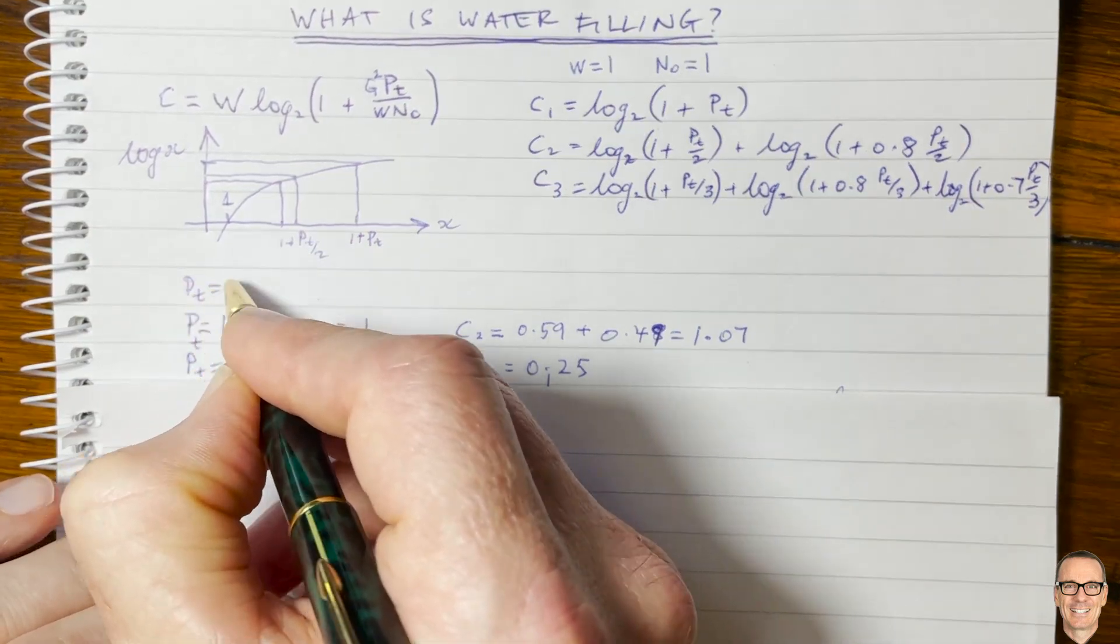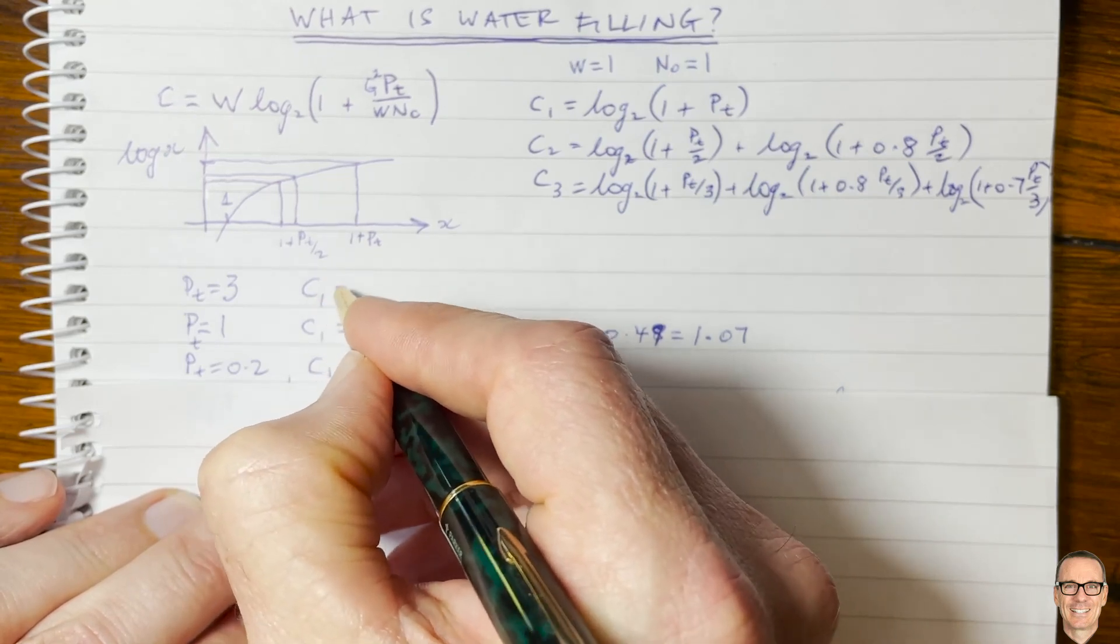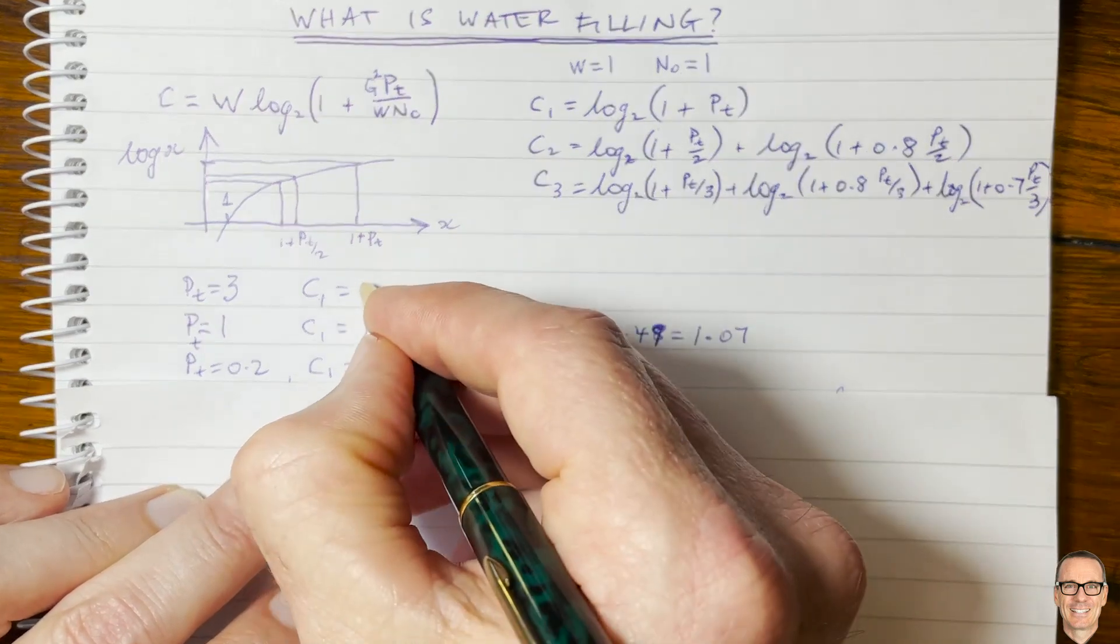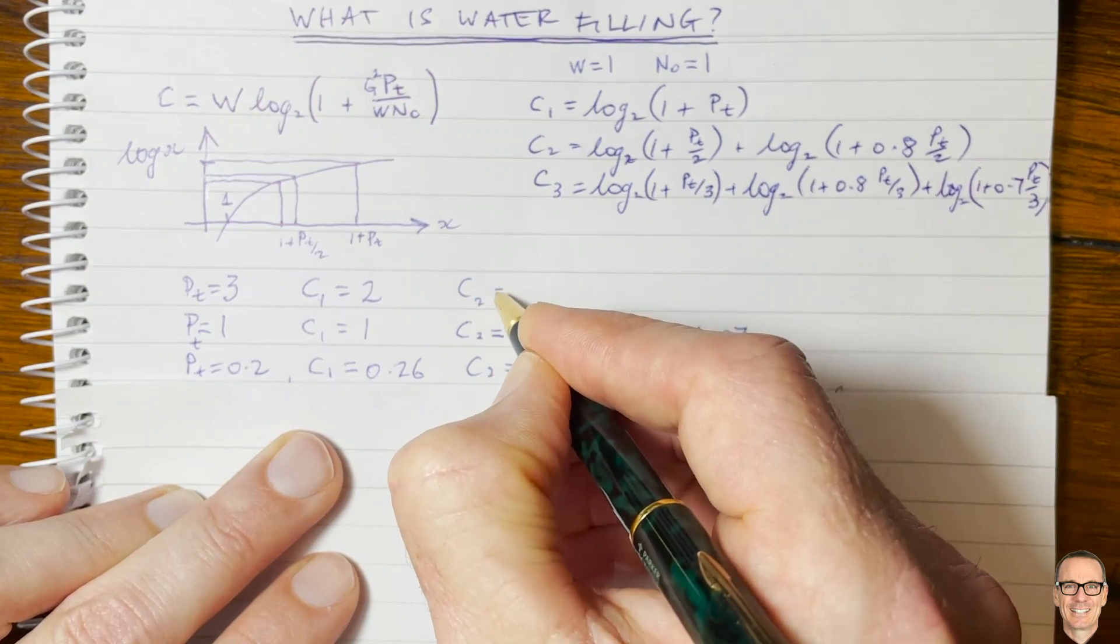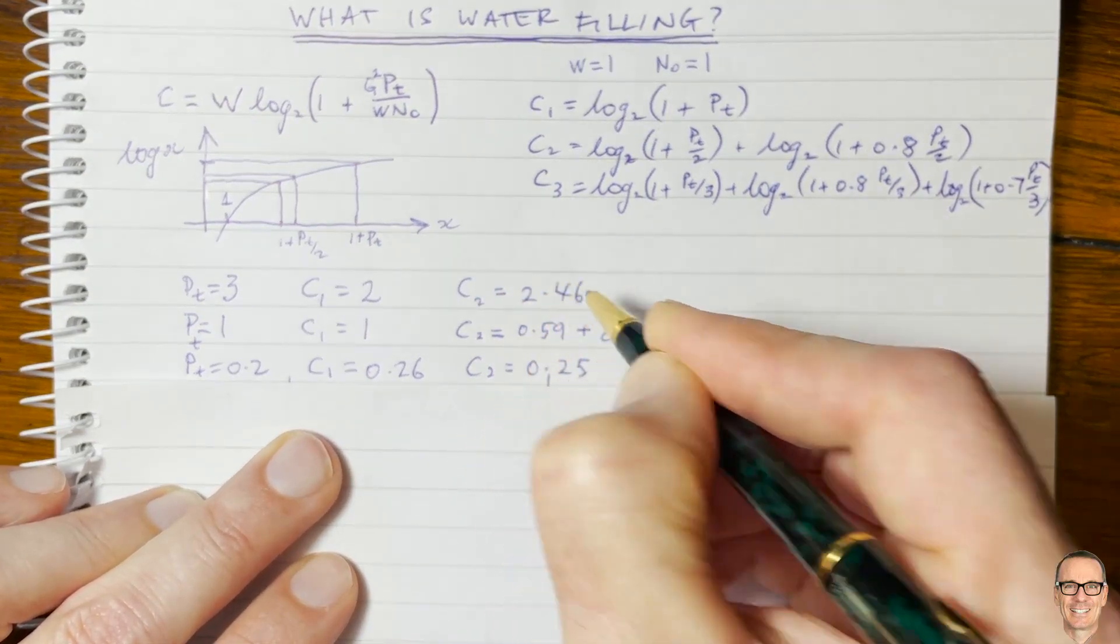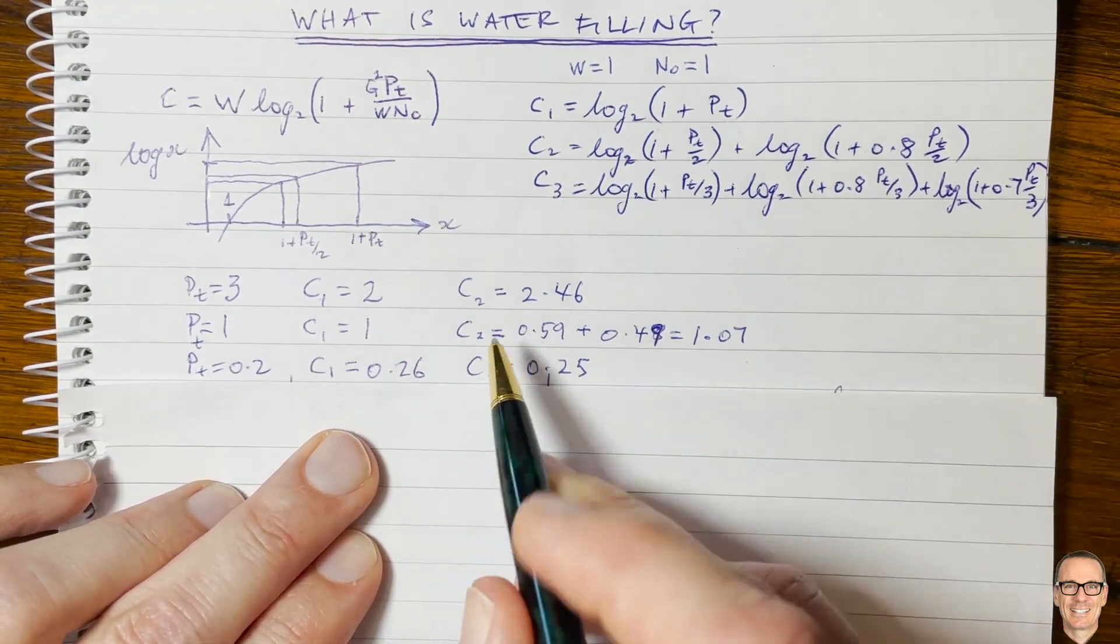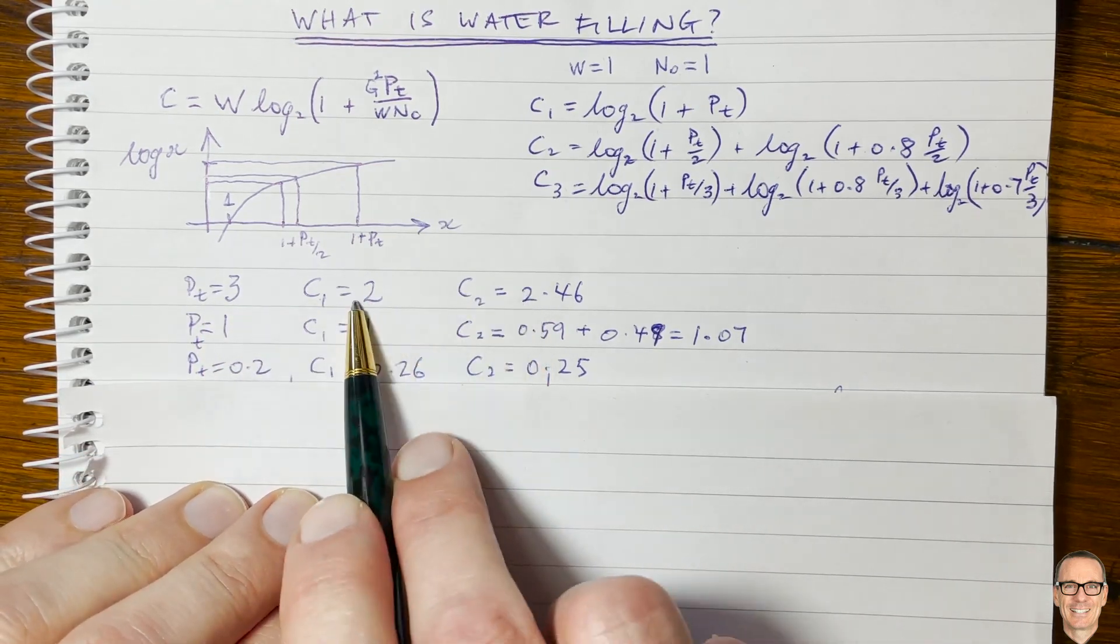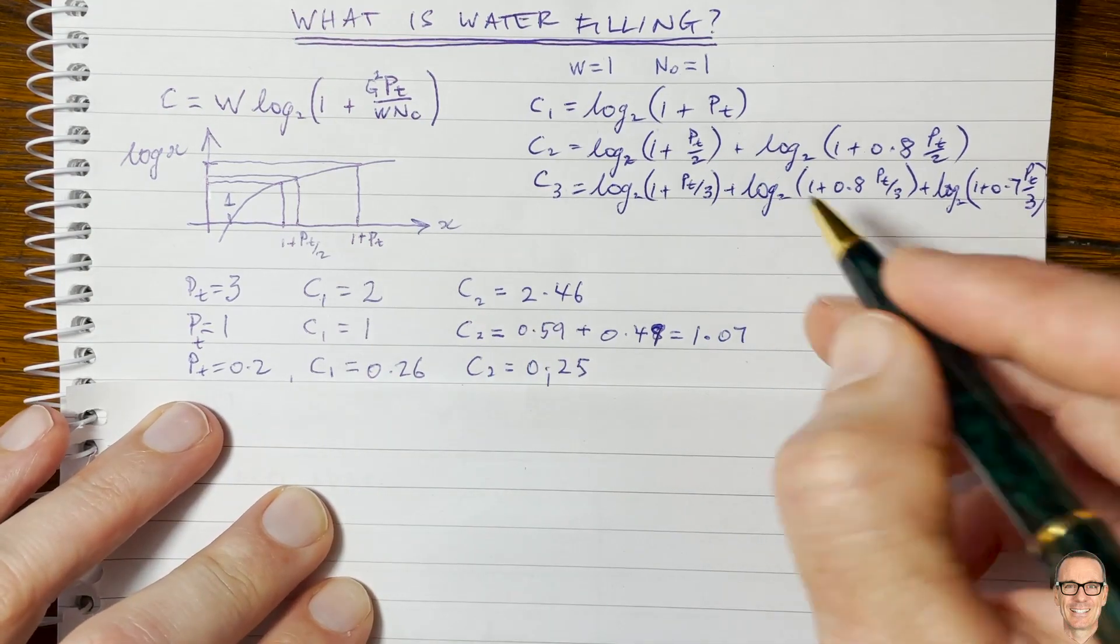So this is an interesting question that we're going to be asking ourselves all the time. What if we had more power than this? And let's try and get some rules of thumb out of this or some intuition, more intuition. So c1 here would equal 2 if you had pt3, because it would be log of 4. c2 will equal 2.46. So there's quite a bit of extra capacity there from using the second sub-channel. And then it's going to increase. So the more power you have, the more gain you're getting from using the second sub-channel.